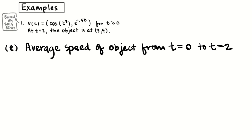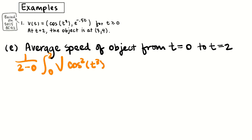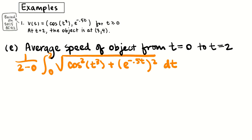Before I let you go, there are a couple more things that could appear. First: average speed. In this class, when you see the average of something, think average value — integrate and divide by the width of the interval. So that would be (1/(2−0)) times the integral from 0 to 2 of speed. Since that total distance integral came back as 2.000, and average speed equals total distance over total time, this one should come back as approximately 1.000.